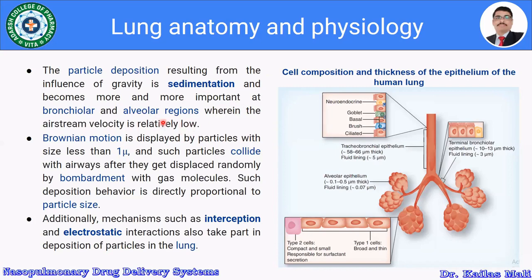Air stream velocity in the tracheal region is higher than in the alveolar region. Another figure shows the cell composition and thickness of the epithelium of the human lung. In this region there are neuroendocrine cells, goblet cells which secrete mucus, basal cells, and brush and ciliated cells which move the mucus. The epithelium thickness here is approximately 10 to 13 micrometers with a fluid lining of 3 micrometers.